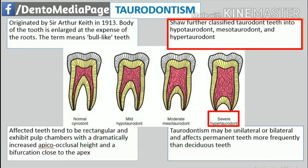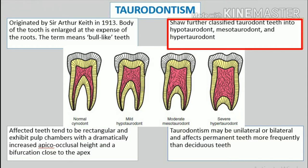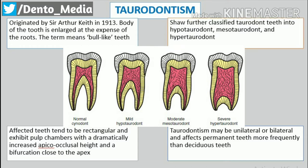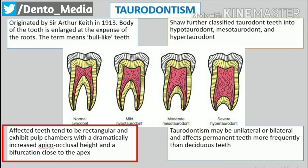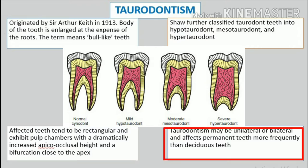Hypertaurodontism is the extreme form in which the bifurcation or trifurcation occurs near the apices of the roots, and hypotaurodontism is the mildest form. Affected teeth tend to be rectangular and exhibit pulp chambers with a dramatically increased apicoeclusal height and a bifurcation close to the apex. Taurodontism may be unilateral or bilateral and affects permanent teeth more frequently than deciduous teeth.